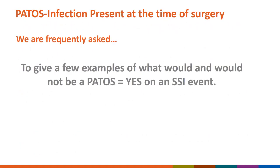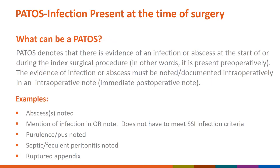Here are some examples of what would and would not be a PATOS equals yes on an SSI event. PATOS means that there is evidence of an infection or abscess at the start of or during the indexed surgical procedure — in other words, it is present preoperatively. For PATOS, you do not need to meet SSI infection definitions. Some examples of PATOS include abscess, infection noted in the OR note, purulence or pus, septic or feculent peritonitis, or a ruptured appendix.